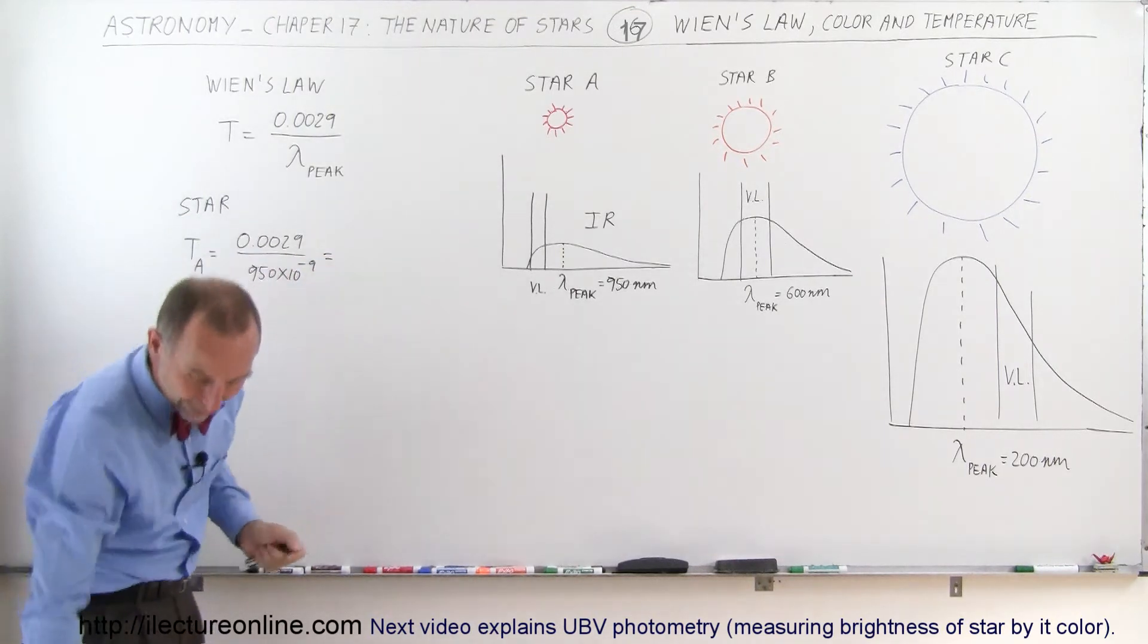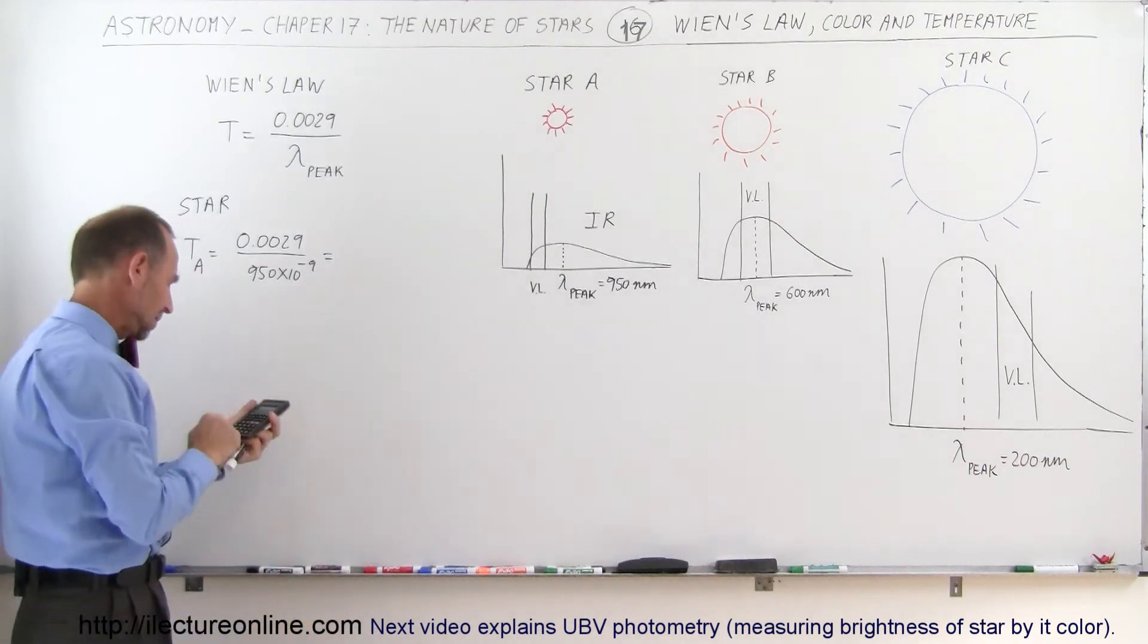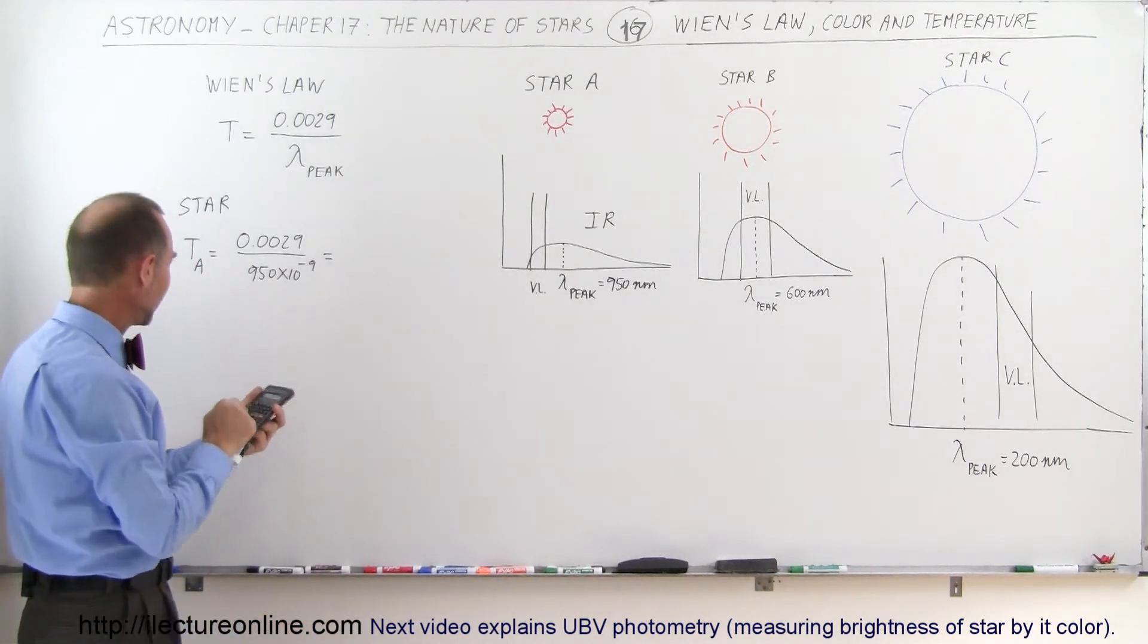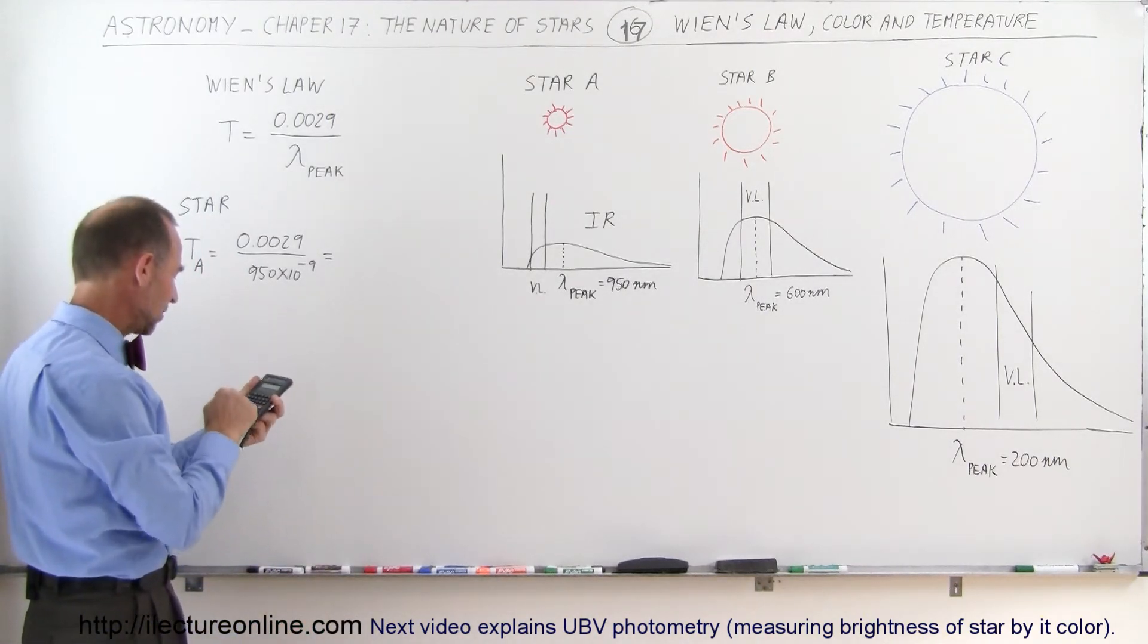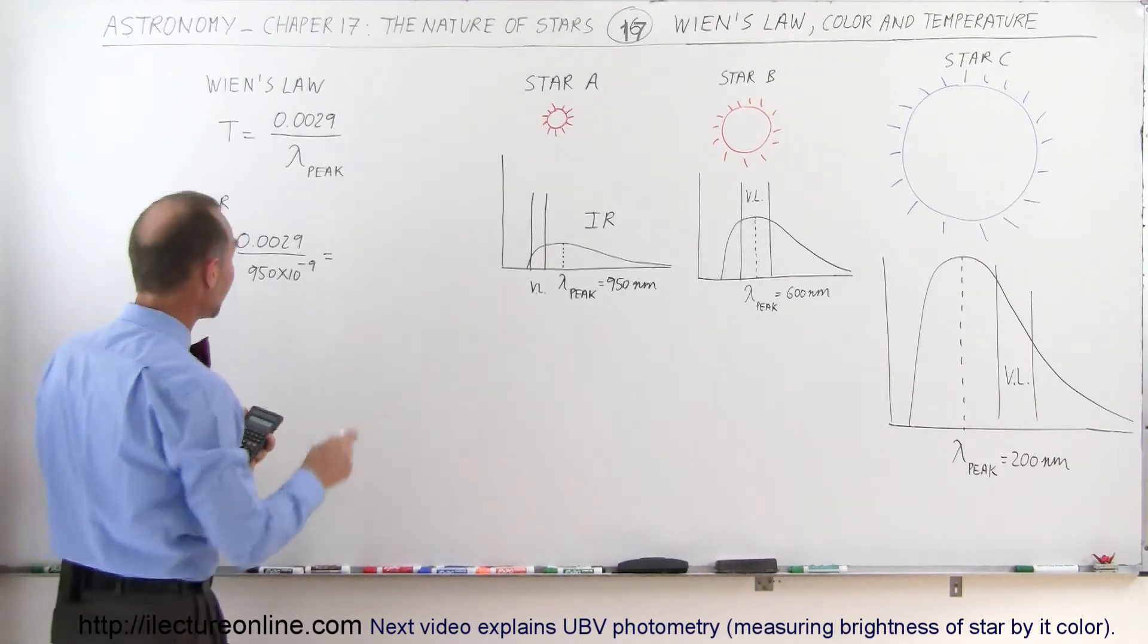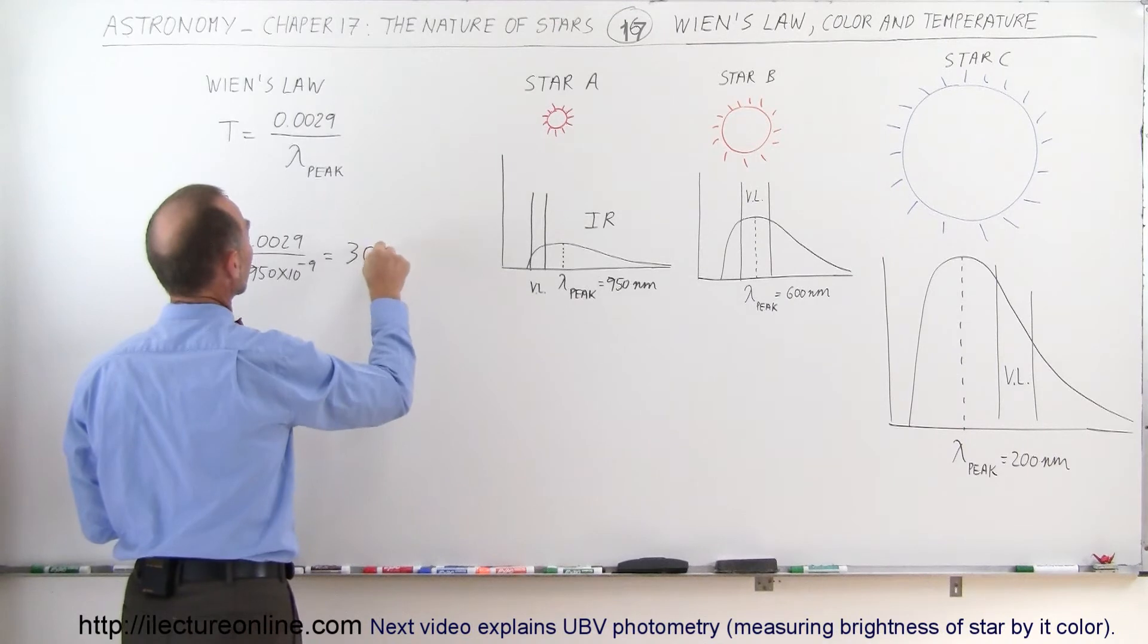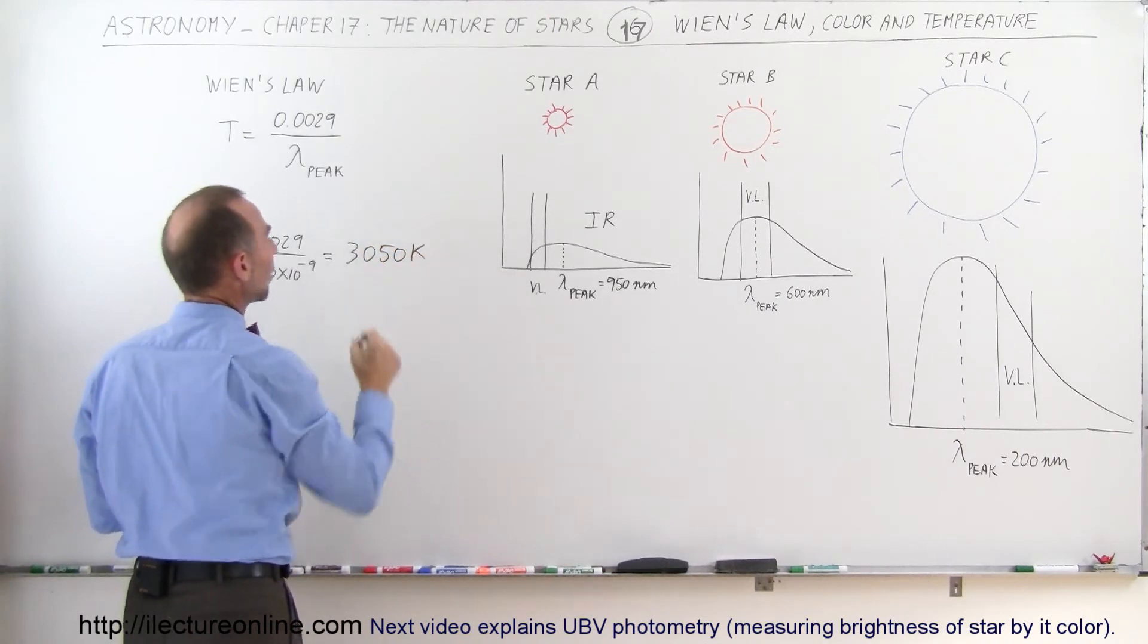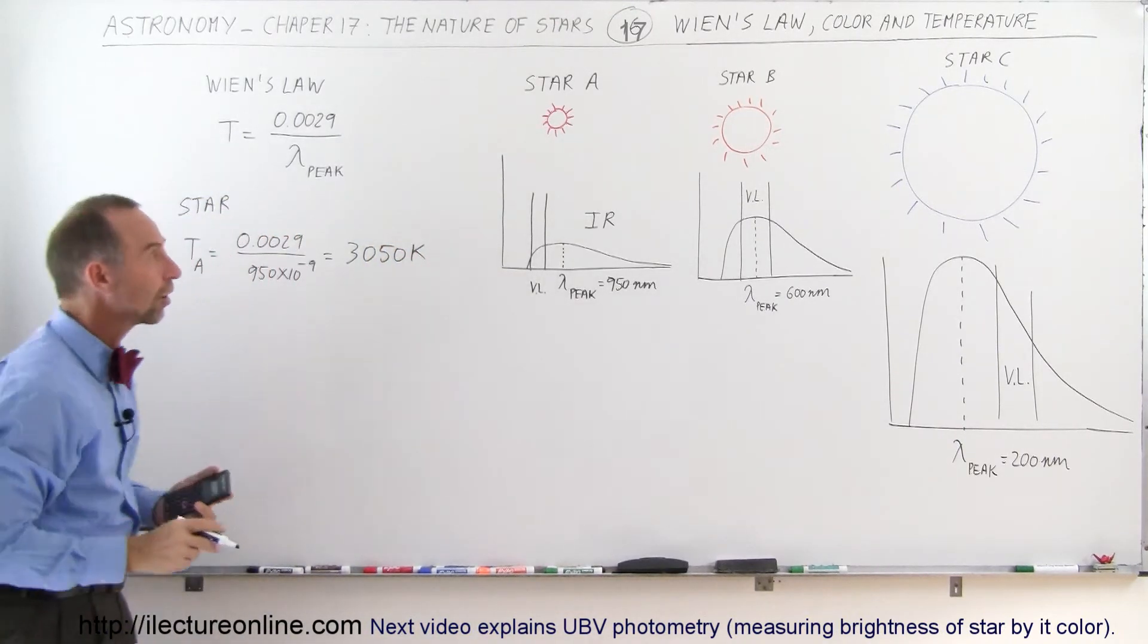So 0.0029 divided by 950 E to the minus 9 equals a temperature of about 3,050 Kelvin. That would be one of those smaller red stars.